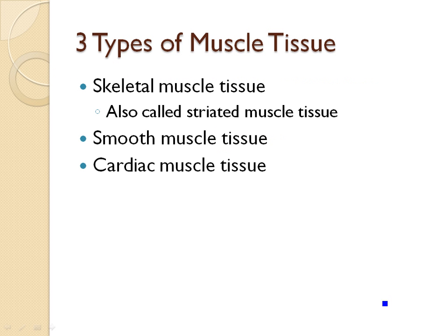All muscle tissue is designed to function in movement of some sort. You've got different types of muscle tissue that allow different kinds of movements. You have skeletal muscle tissue, which is also called striated muscle. Striated muscle is called that because it's striped — it looks striped when you look at it under a microscope. This kind of muscle is attached to the bones of your body and that allows movement like walking or waving your hand.